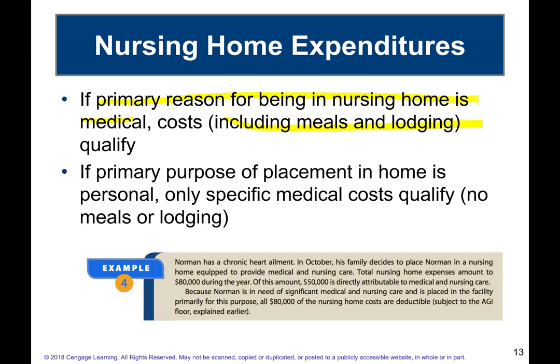Example: Norman has a chronic heart ailment, and his family places him in a nursing home equipped to provide medical and nursing care. Total expenses were $80,000, of which $50,000 is directly attributable to nursing care. Because Norman is placed there primarily for medical purposes, all $80,000 — including the boarding portion — is deductible as a medical expense.